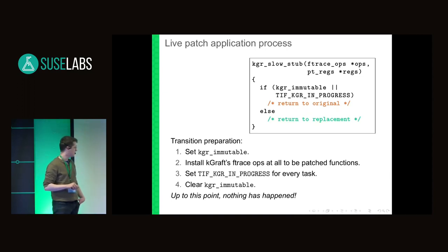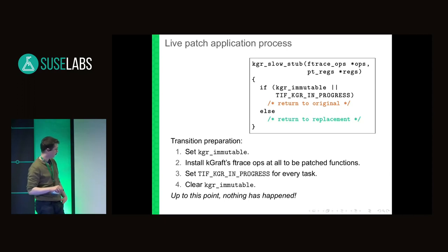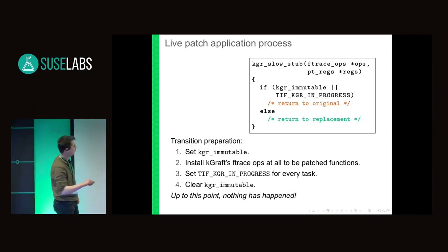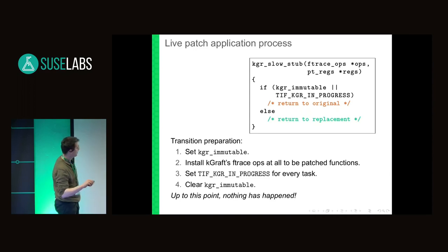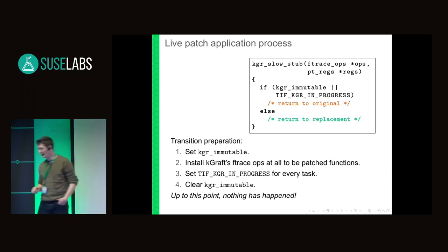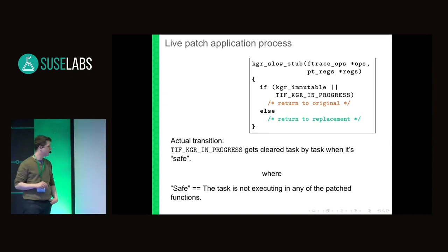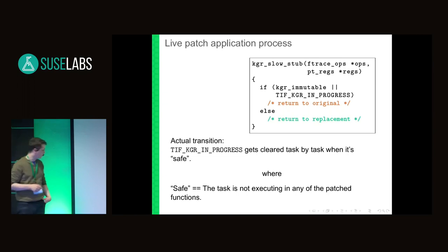KGRAFT then sets some per-task or per-thread-info flag on each task and clears the immutable flag afterwards. Up to this point, nothing has changed on the system because this condition always evaluates to true. At this point, every task has this flag set. Now the transition starts and these flags get cleared one by one when it's considered safe — meaning the task is not executing any of the about-to-be-patched functions.